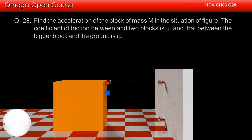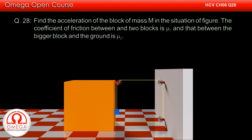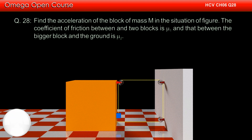Find the acceleration of the block of mass M in the situation below. The coefficient of friction between the two blocks is mu1, and that between the bigger block and the ground is mu2.